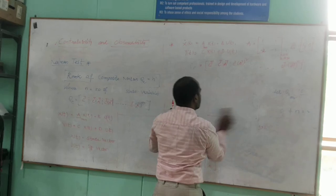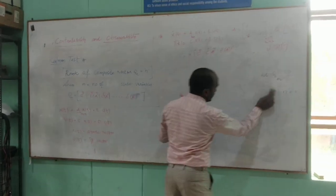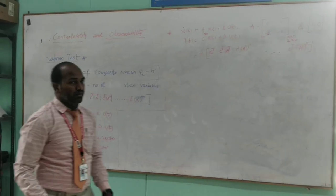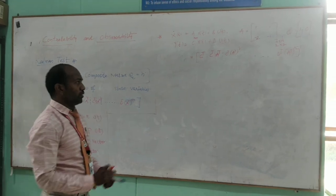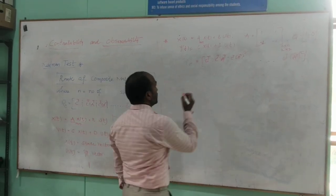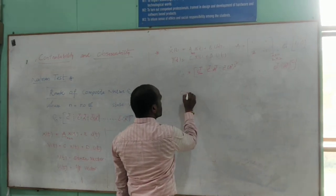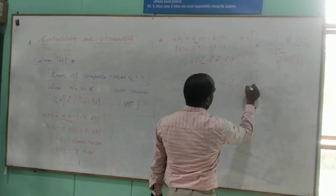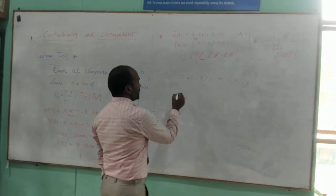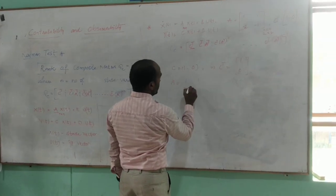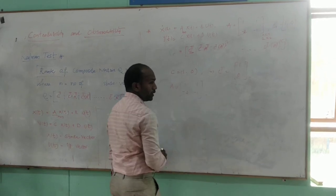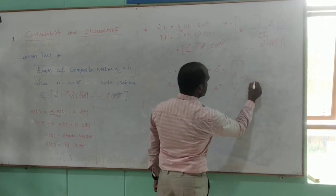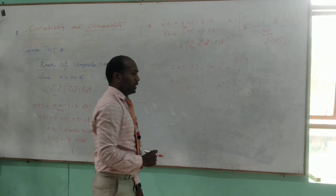Let us find the composite matrix. Once we have it, we find its rank and compare it with N. If both are equal, the system is observable; otherwise it is not. C is [1, 0], so C-transpose is [1; 0]. Matrix A is [1, 1; -2, -1], so A-transpose is [1, -2; 1, -1]. Now let us find the product C-transpose times A-transpose.